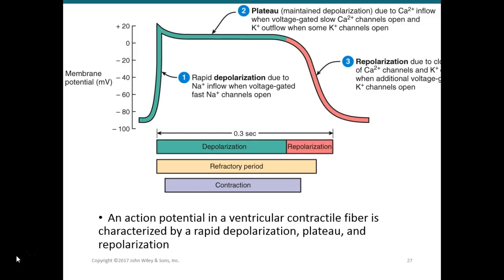An action potential in a contractile fiber in a ventricle — a ventricular myocyte — is characterized by rapid depolarization, a plateau phase, and then repolarization. There is very rapid depolarization as sodium flows in when voltage-gated sodium channels open. Then there is a plateau or flat phase of maintained depolarization due to calcium influx when voltage-gated calcium channels open, combined with potassium flowing out when some potassium channels open. Then rapid repolarization occurs due to the closing of calcium channels and additional potassium outflow.